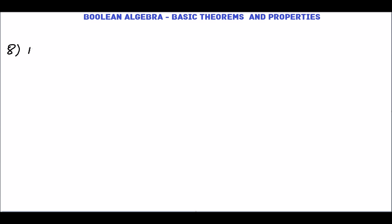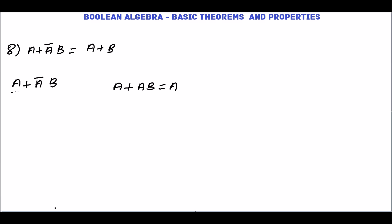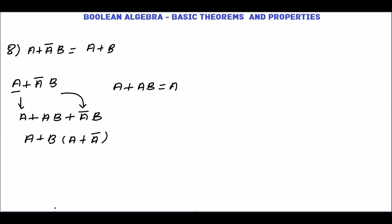The next theorem is a + ā·b = a + b. Taking the left-hand side a + ā·b, and using the fact that a + ab = a, we write a = a + ab. So we have a + ab + ā·b. Factoring b from the last two terms: a + b·(a + ā). Since a + ā = 1, we get a + b · 1 = a + b. Hence a + ā·b = a + b.